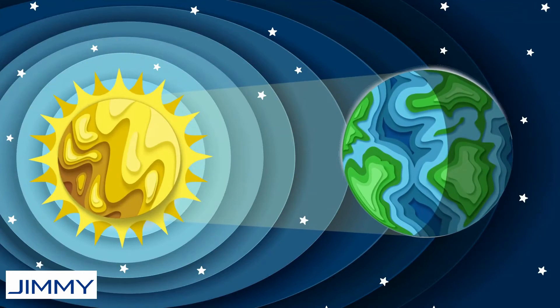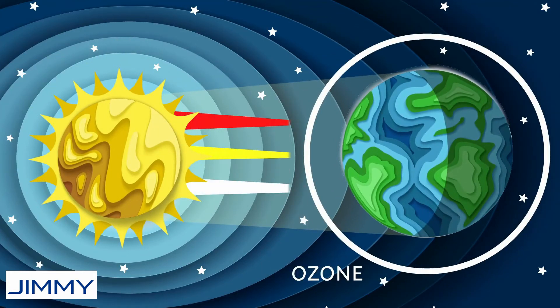UV light is the same as the rays that we get from the Sun, and there are three types of ultraviolet light that reach the ozone layer around the earth: UVA, UVB, and UVC.